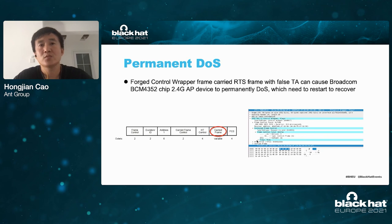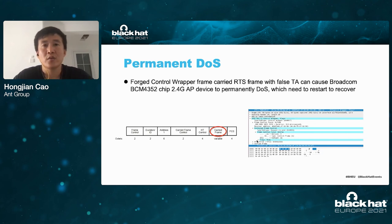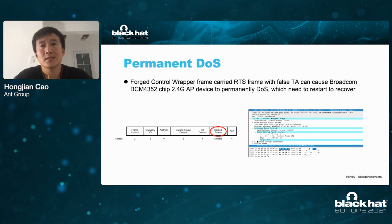The permanent DOS was discovered in Qualcomm 2.4G AP devices. An attacker can use a forged control wrapper frame carrying an RTS frame with a false transmitter address to cause the AP to permanently DOS a client device. The AP needs to restart to recover.